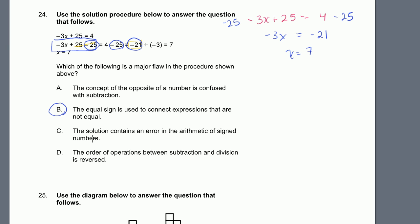Let's look at the other choices. The solution contains an error in the arithmetic of signed numbers. No, the solution is arithmetically correct. D, the order of operations between subtraction and division is reversed. So I really don't see that. So my choice would be B. The equal sign, this right here, does not equal this right over there.